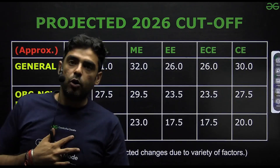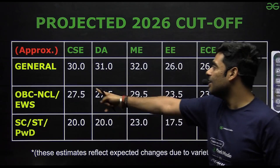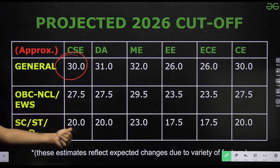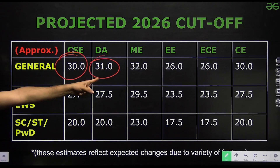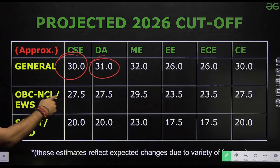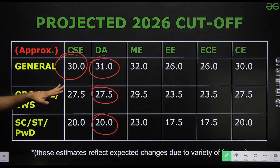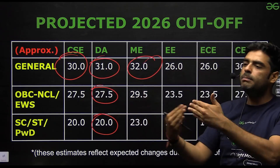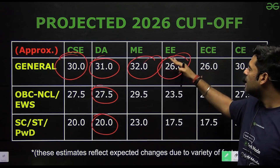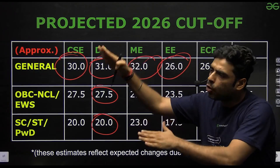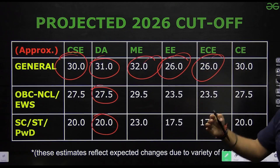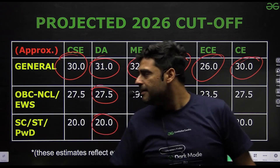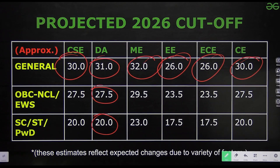Here are the projected 2026 cutoffs. For CSC general, I expect around 30 to 31 marks; OBC around 27.5 and SC/ST around 20. For DA, I think it would be around 31 to 32 marks since the paper may be a bit tough; OBC around 27.5 and SC/ST around 20. For mechanical general, the cutoff could be between 31 to 32 marks. For electrical, around 25 to 26 marks since paper difficulty has been similar over the last three years. For ECE, around 25 to 26 marks for general. For civil engineering, around 30 to 31 marks for general. This should give you a sense of expected cutoffs and likely difficulty level.